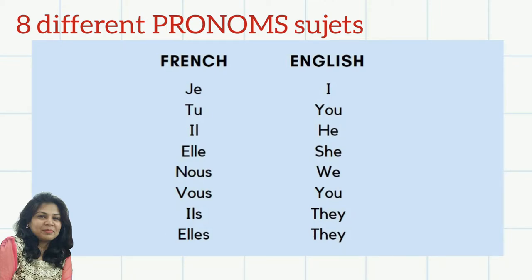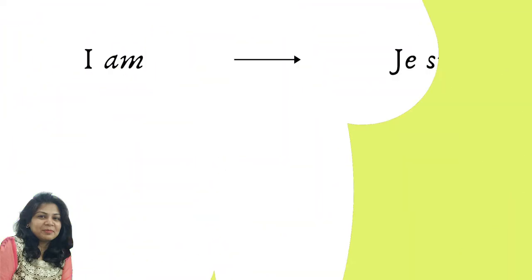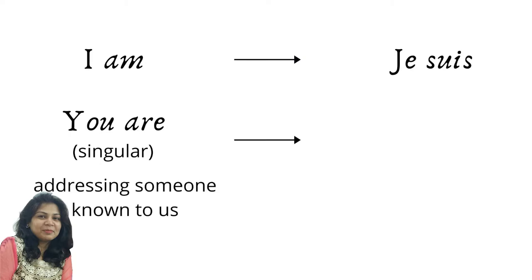So I am will be je suis. You are, so if you is a singular you, or we are addressing somebody who is known to us, we will say tu es.